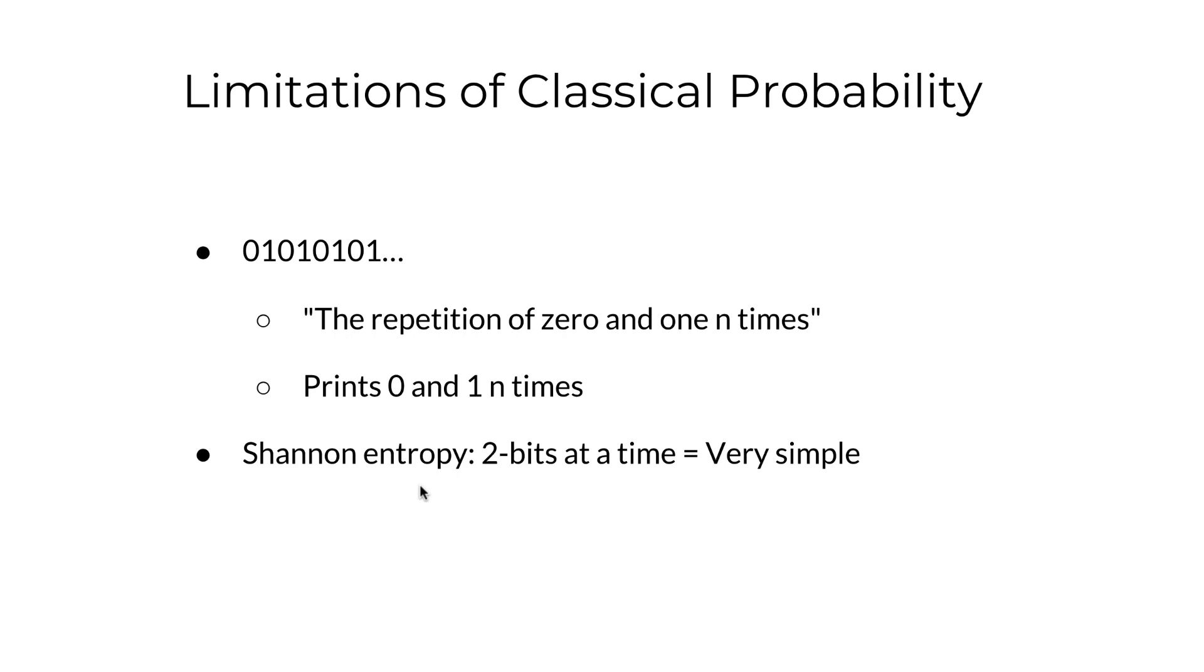In the case of this string of alternating 0 and 1, for example, it would need to take microstates of two bits at a time and Shannon entropy would tell that the string is indeed very simple.